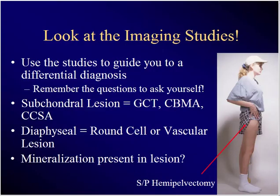After you've read the question carefully, look at the imaging studies. Use the studies to guide you to a differential diagnosis. Remember the questions you ask yourself: where is the lesion, what's it doing to the bone, is it big or small? Chondral lesions have a limited differential. A diaphyseal lesion might be a round cell lesion or vascular lesion. Is there mineralization present? Use all those things from your radiograph to guide you towards a reasonable differential diagnosis that fits with the description that's been given to you.